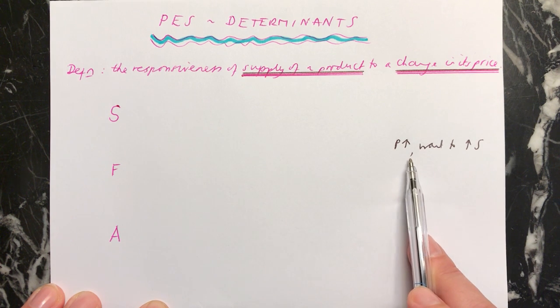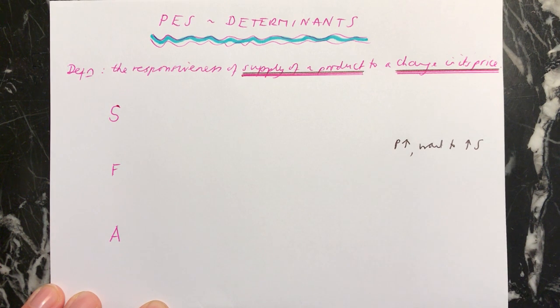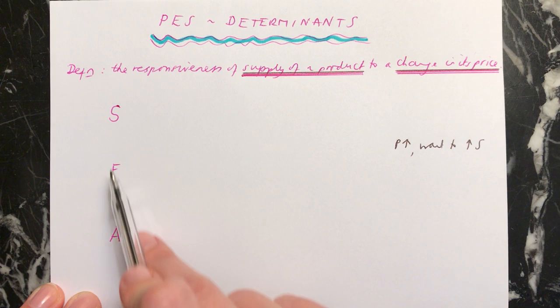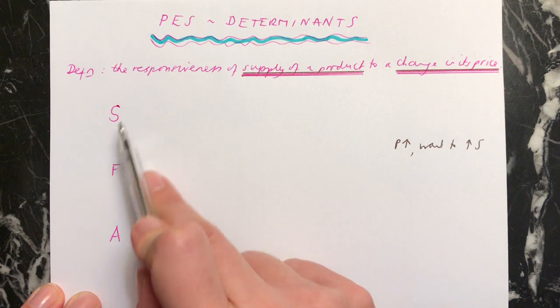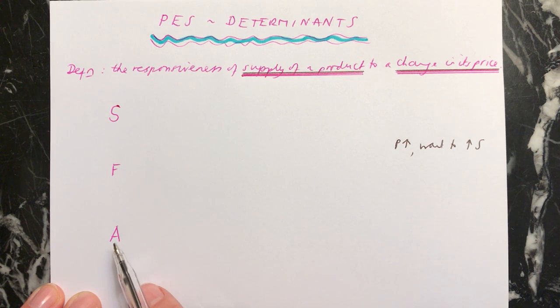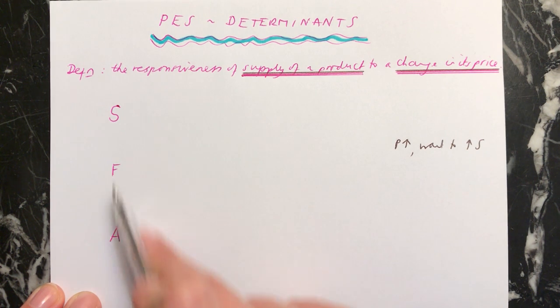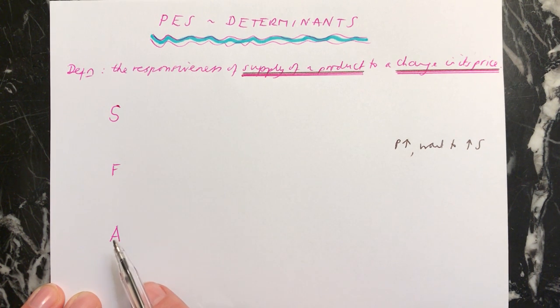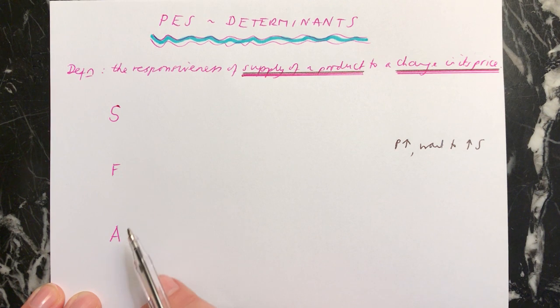If the price goes up, can firms supply more? Are they able to supply more when they want to? A way to remember the determinants is with the acronym SFA. If you look up SFA, you'll see that it stands for something else as well, which might help you to remember this.